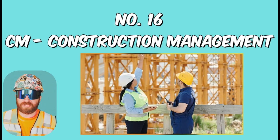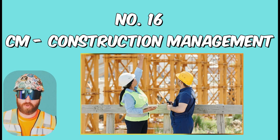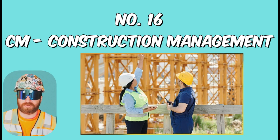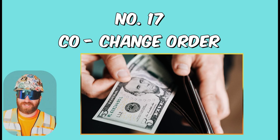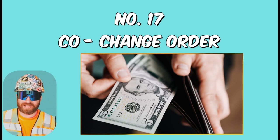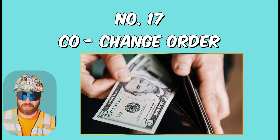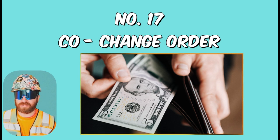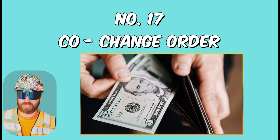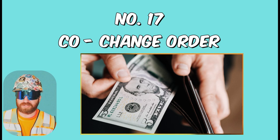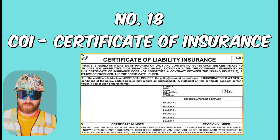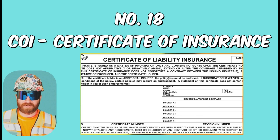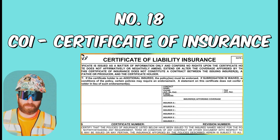CM, or Construction Manager. This can be a firm or general terminology for a variety of roles within the industry. Construction managers are responsible for planning, coordinating, budgeting, and supervising projects from start to finish. CO, or Change Order, is when the owner or architect changes aspects of the construction documents, therefore changing the aspects of the contract — this may result in a price increase or decrease, or a schedule increase or decrease. COI, or Certificate of Insurance, is just making sure everyone's covered if there was an unforeseen accident.